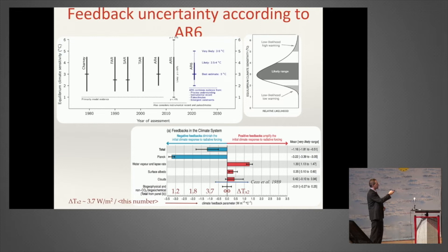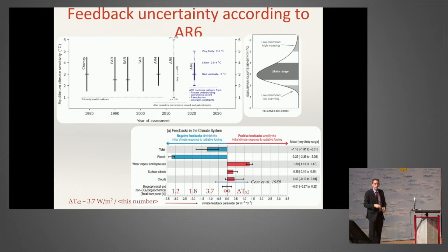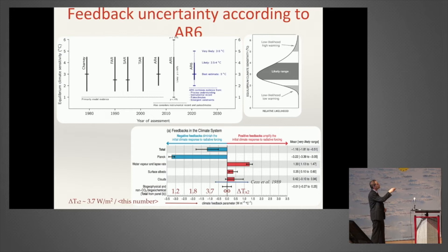If you open the last IPCC report, they show that if you double the amount of CO2, the temperature should change by anywhere between one and a half and four and a half degrees. This dates back to a federal committee that convened in the US some 40 years ago, and this range has stayed basically the same over 40 years even though we invested billions of dollars to understand climate better.